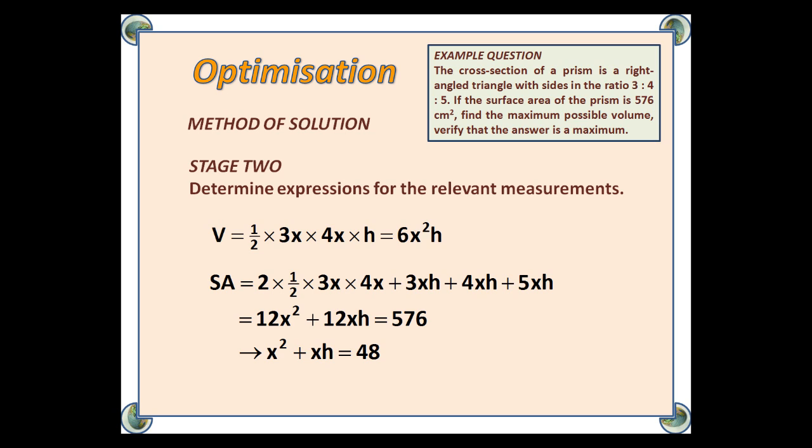For the surface area, we have two triangles and three rectangles. So, the triangles are 2 times a half times 3x times 4x, and then our rectangles are 3xh, 4xh, and 5xh. This simplifies to 12x² + 12xh. And since the surface area is 576, we can put that in there. And the whole thing simplifies to x² + xh = 48.